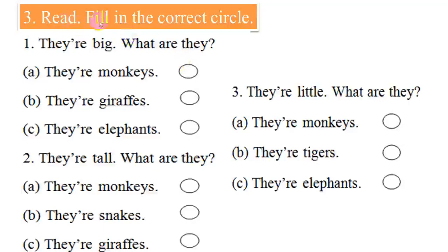Read, fill in the correct circle. One, they're big, what are they? The answer is C, they're elephants. You do two and three.